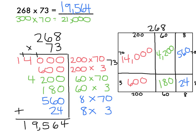You can see how these products correlate to the visual model of the array. You can see the 200 times 70, the 200 times 3, the 60 times 70, the 60 times 3, the 8 times 70, and the 8 times 3. So you can see how partial products relates really well to the visual model of the array.